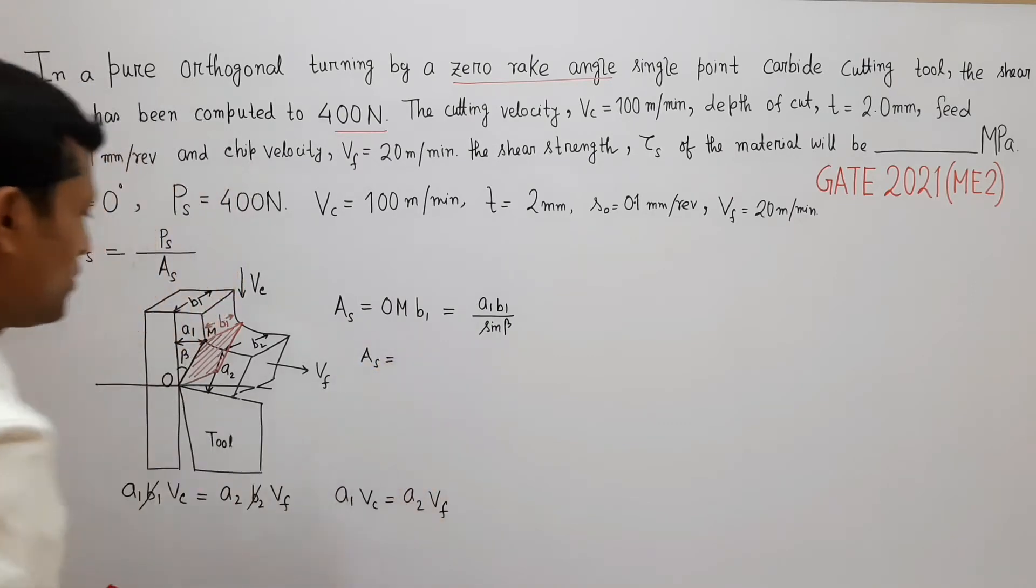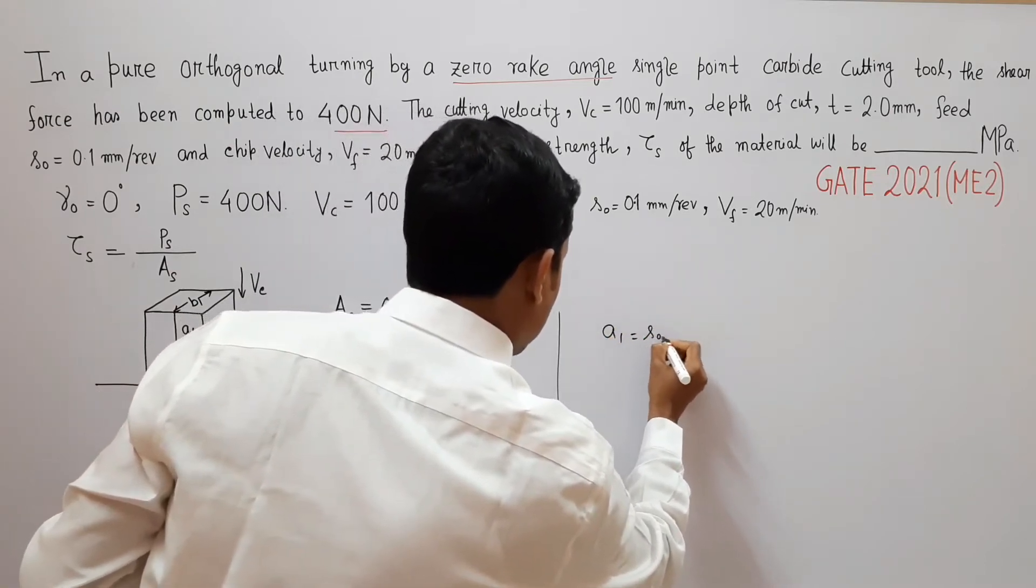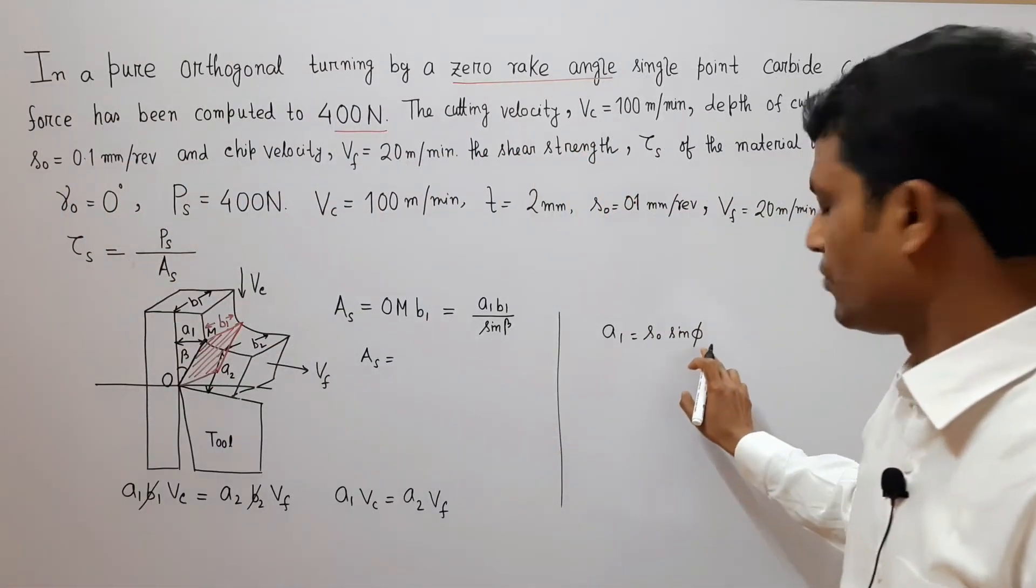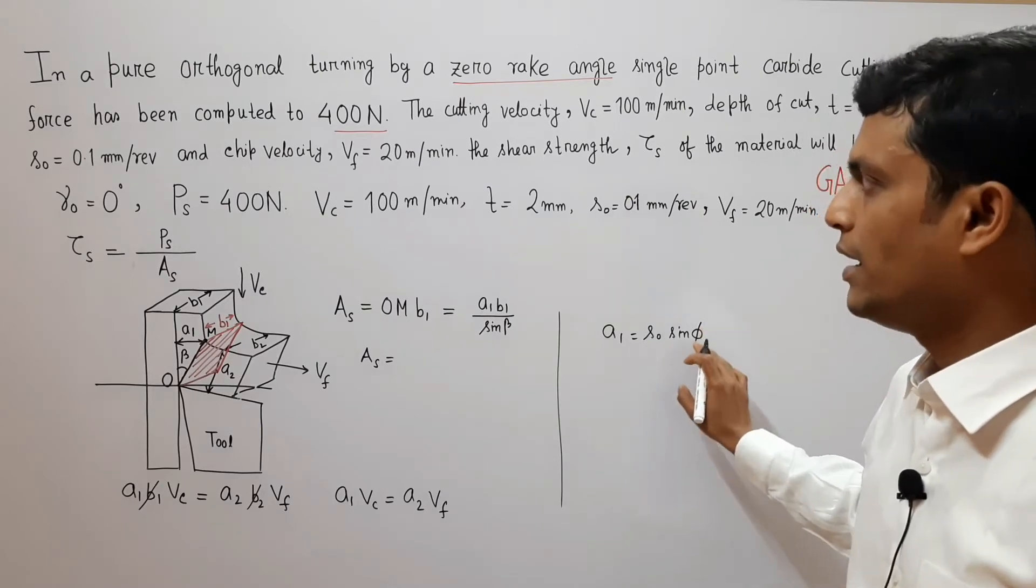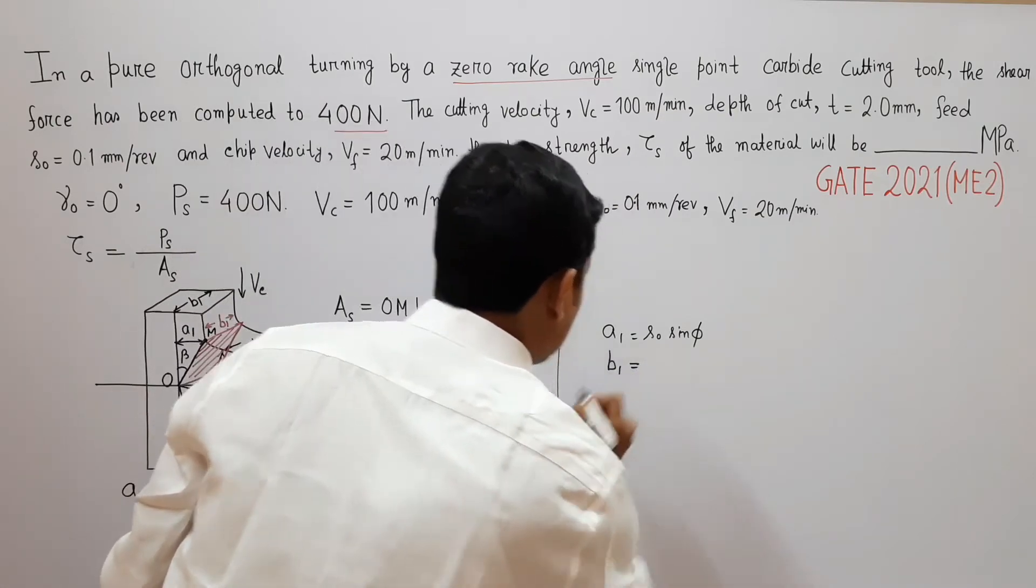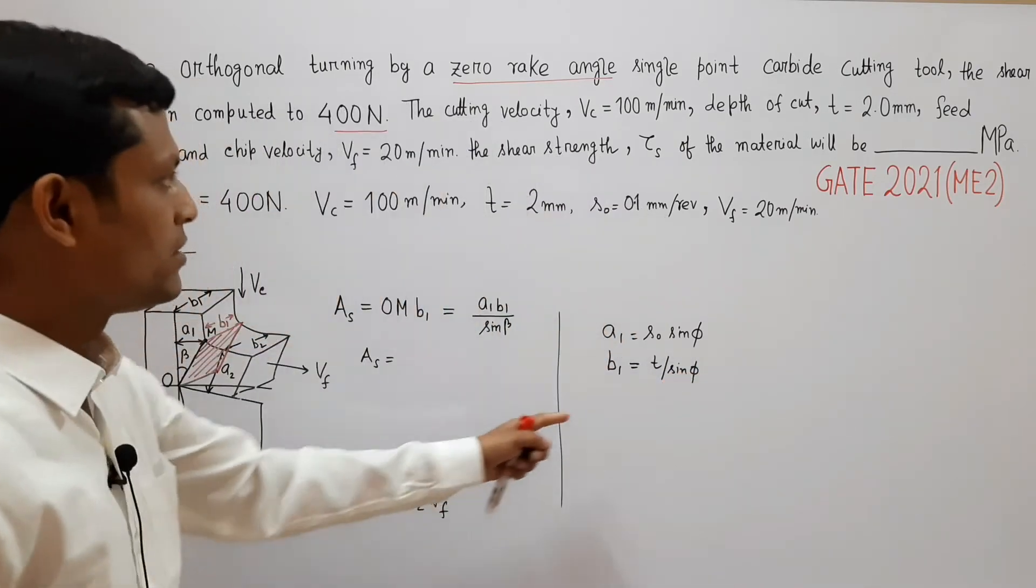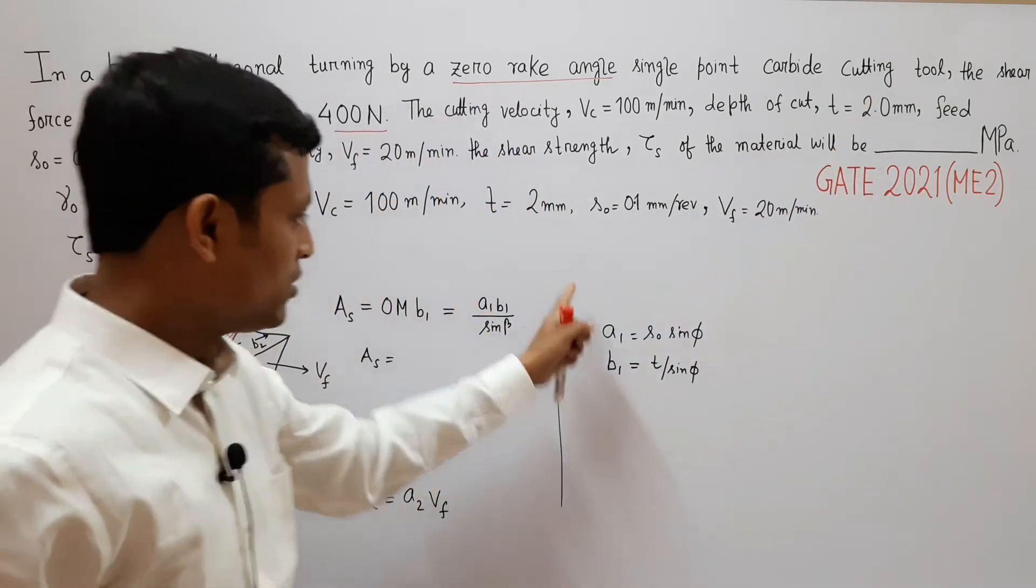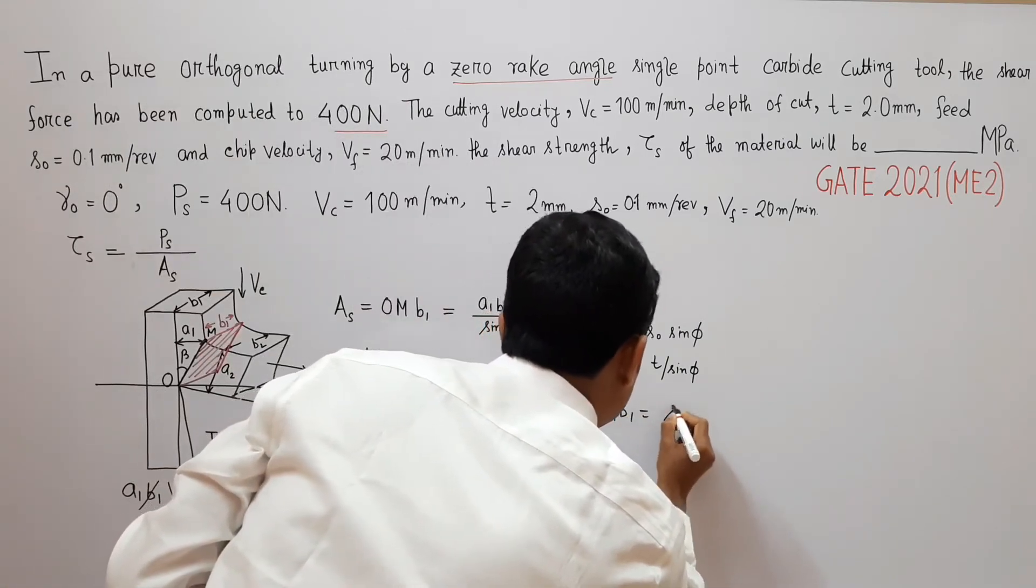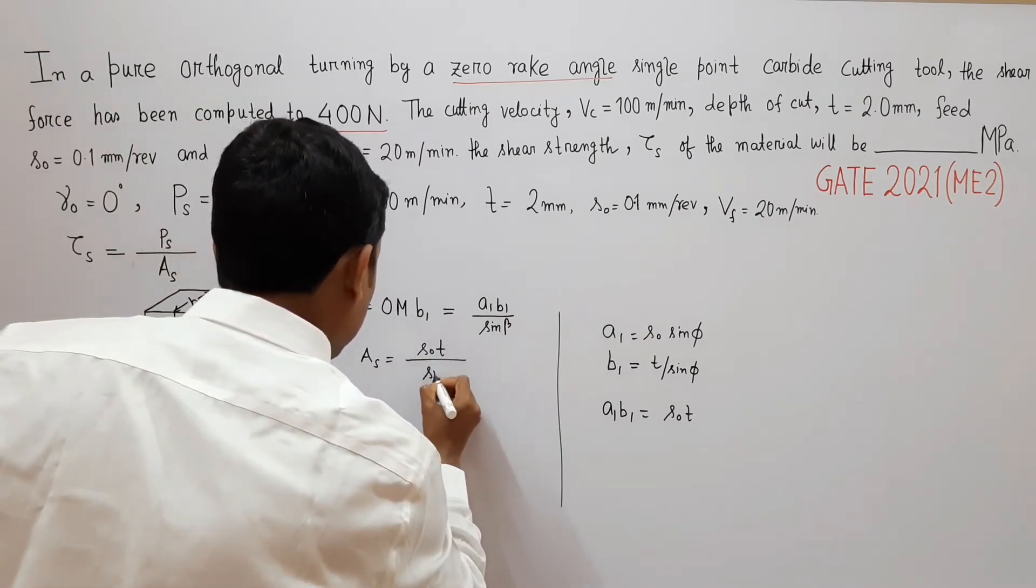Now we know that A1 is S0·sine phi where phi is principal cutting edge angle, and B1 that is uncut chip width is T by sine phi where T is depth of cut. These two relationships I have explained in my previous lecture. So A1·B1 is nothing but S0·T, so A_s becomes S0·T·sine of beta.